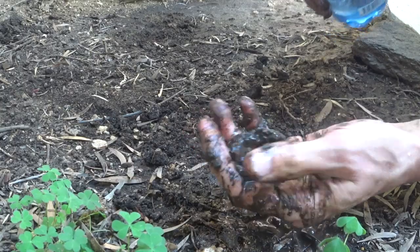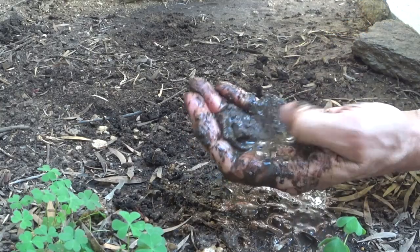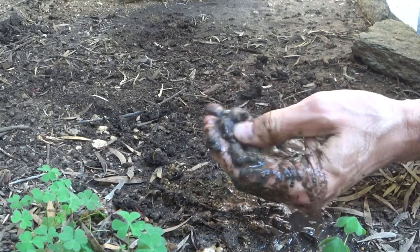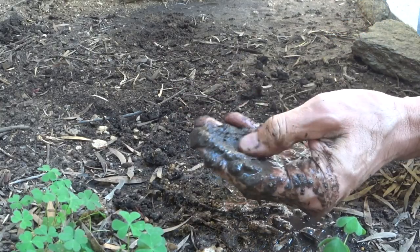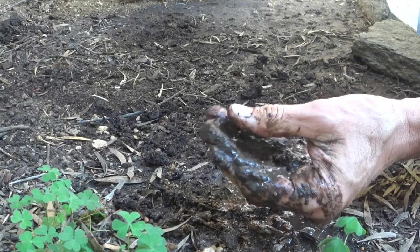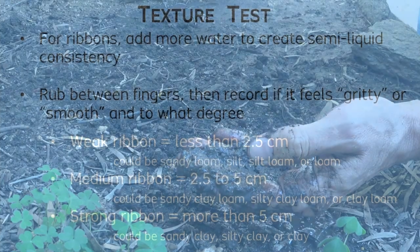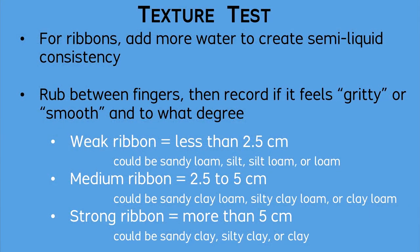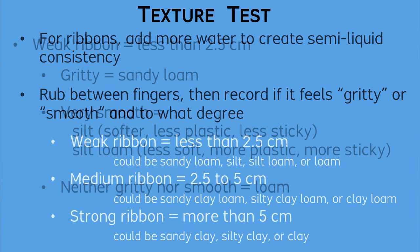You can add a little more water to a ribbon for creating a semi-liquid consistency, and then you can feel the texture between your fingers. At this point in the test, you can remember that larger particles will feel grittier, while smaller particles will feel smoother. With the different ribbon lengths, you can identify the specific texture category.